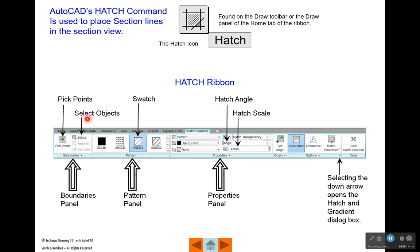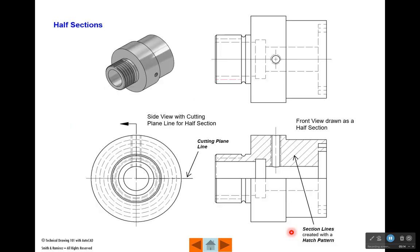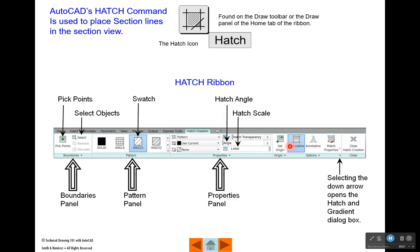There are some things on there that you'll deal with, like picking the points - that's the area. That would be picking inside here and picking inside here so that the pattern would be placed inside those areas. The swatch is what your pattern looks like. If you pick on the down arrow, you have a bunch of different patterns you can choose. ANSI 31 is the standard 45 degree angle.